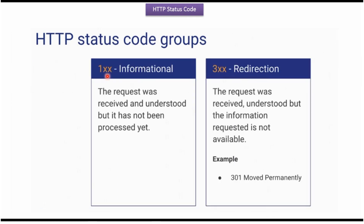The fourth group is the 100 series status code, which is informational. The client sent a request to the server; the request was received and understood by the server, but the request has not been processed yet.